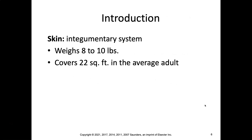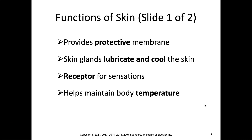Your skin, if you could unzip it and take it off like a snowmobile suit, it weighs 8 to 10 pounds. It covers 22 square feet in the average adult. Can you imagine that? Amazing. It provides a protective membrane. There are skin glands that lubricate and cool the skin, receptors for sensation, and it helps maintain your body temperature.